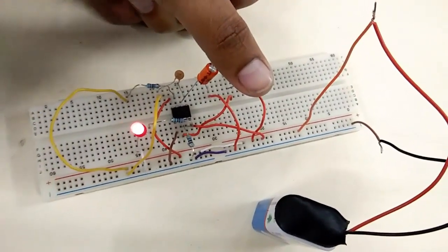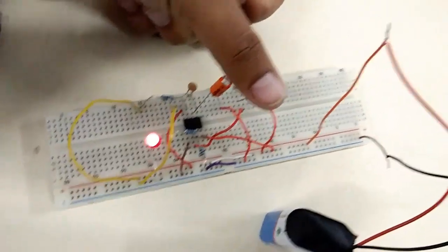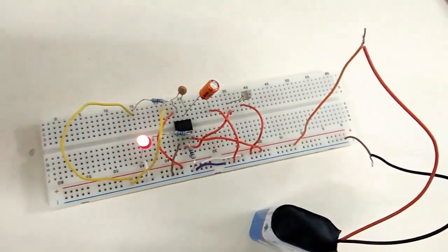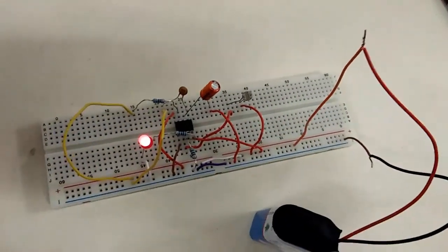This is a simple application of a 555 timer and LDR for a darkness detection circuit. Thank you for watching.